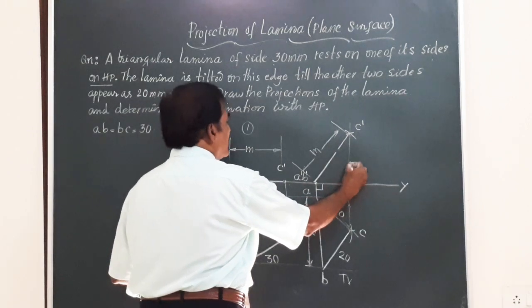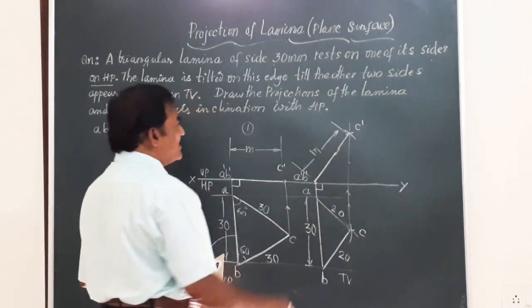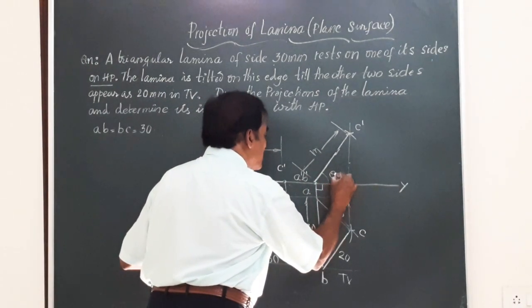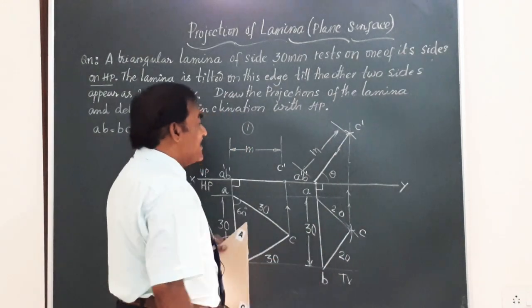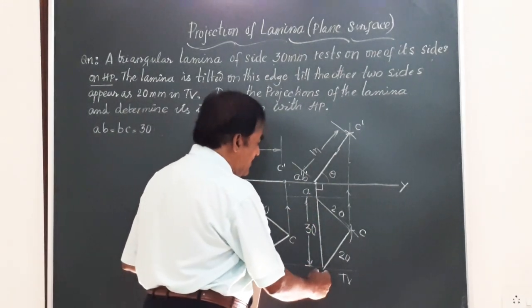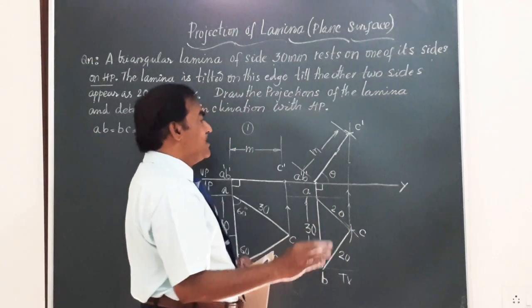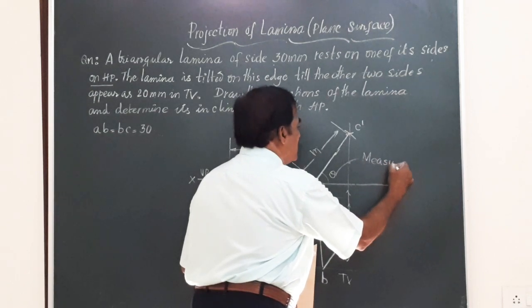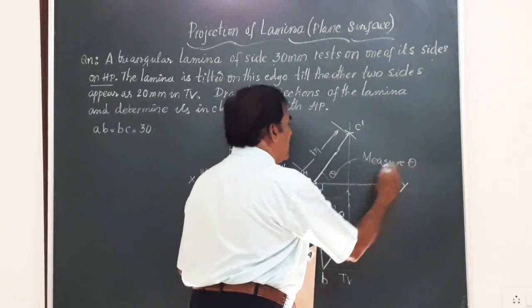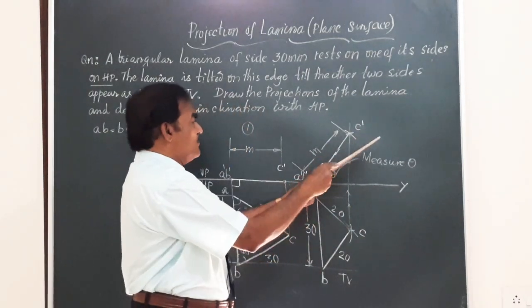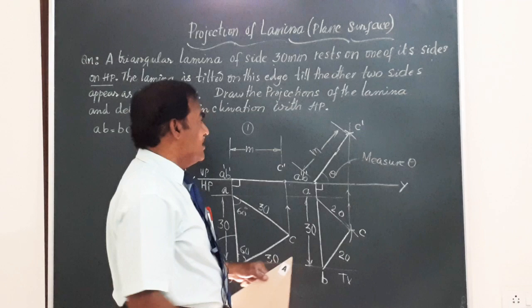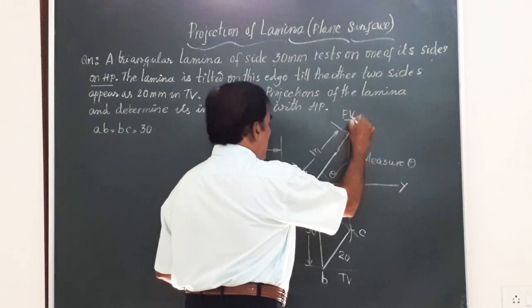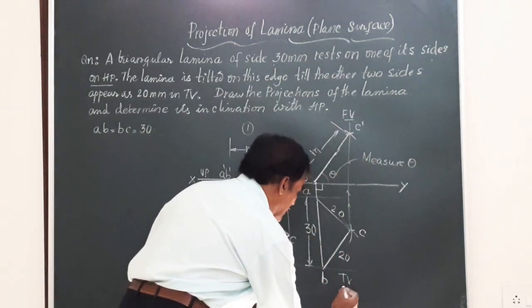I have drawn an arc to cut the vertical here. And this line represents the surface of the lamina which is making an angle theta for which this is going to become an isosceles triangle having A' B' 30, B' C' and C' A measuring 20 mm each. Friends, you can measure this theta. Measure theta. Remember, this theta will give you the inclination of the surface of the lamina with the HP. And this line to be shown in dark is the front view of the lamina and this triangle is the top view of the lamina.